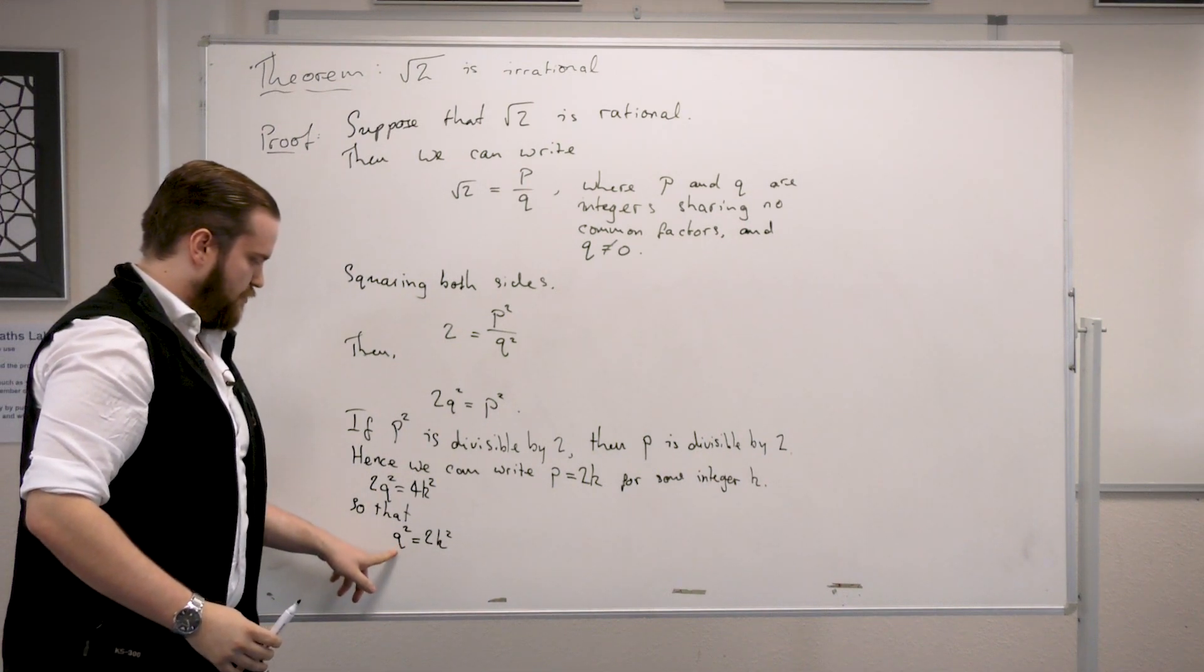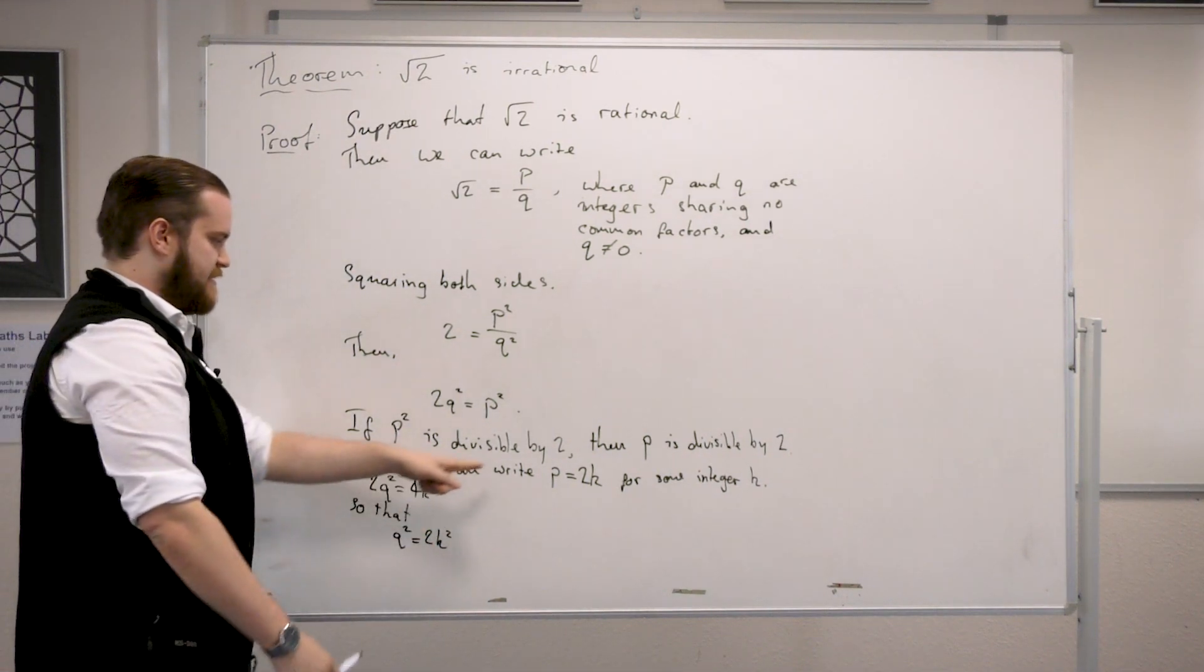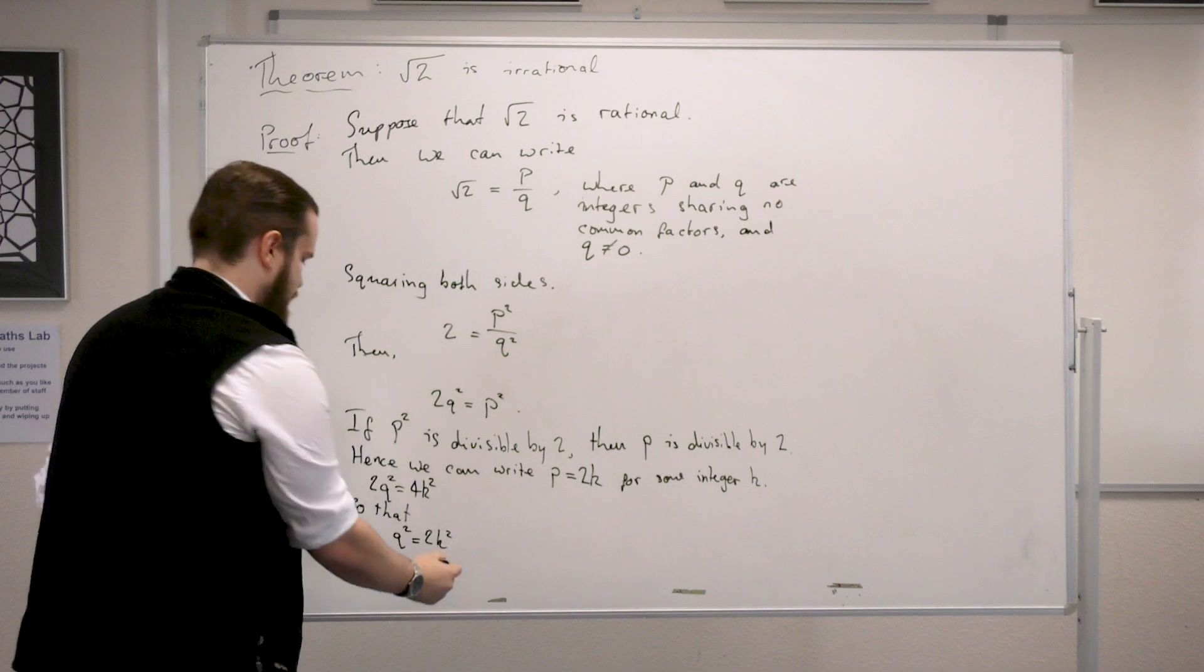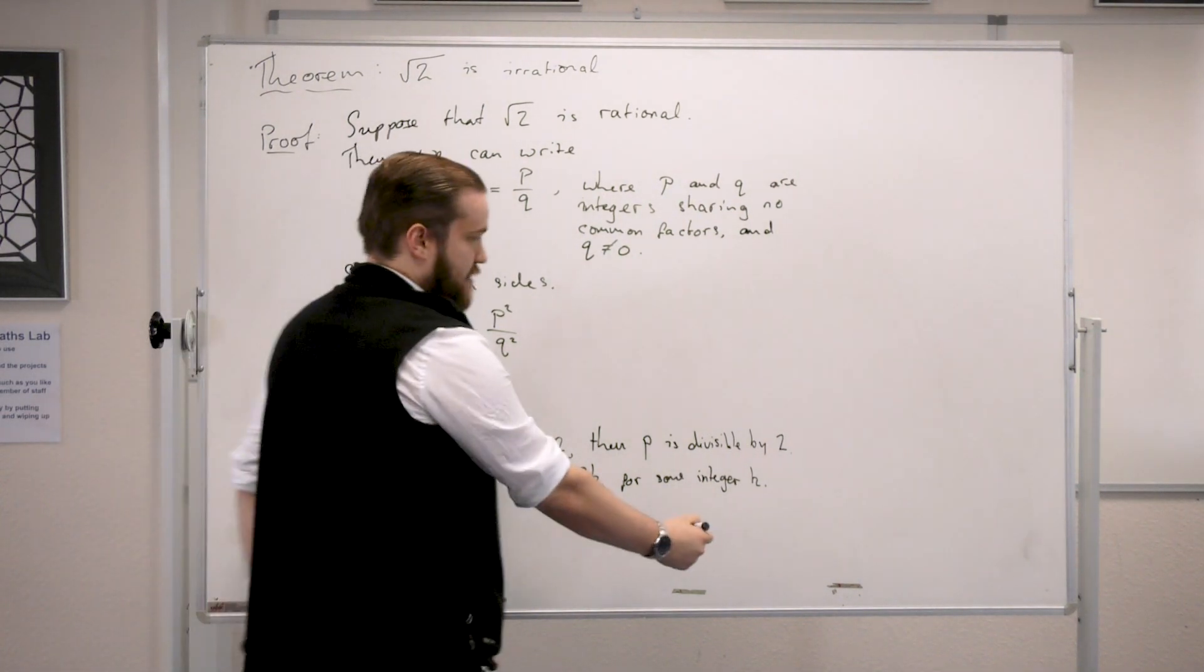But that means that q is divisible by 2, for the same reason that p was divisible by 2. So I'm going to write over here now.